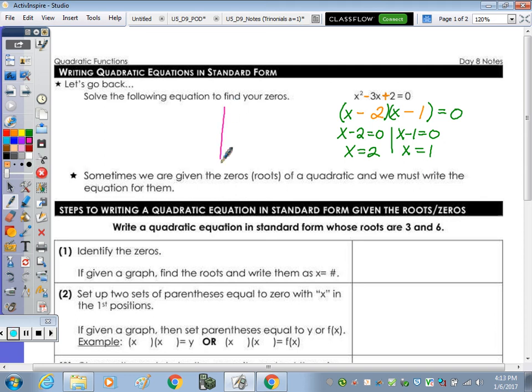And remember, the roots are where the quadratic intersects the x-axis. So it's a positive x squared, so it's going to be right side up. And I'm just doing a sketch. Here's x equals 1, and here's x equals 2. So they can either give you the roots algebraically or with the graph, and then we're going to work backwards and write the equation.